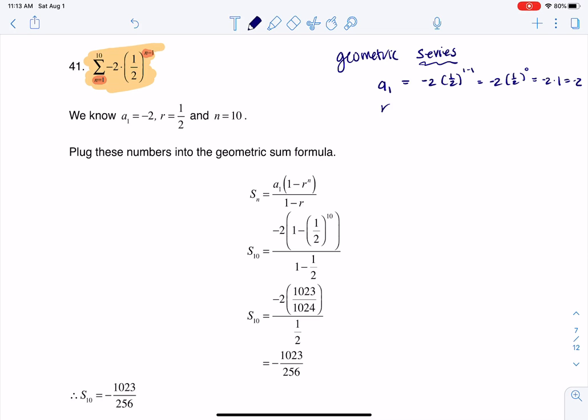So I know my a sub 1 value, which is great. And because we're given this series in summation notation, I can see my r value. My r is always the base of that power. We've got an exponential term—I say exponential because the variable's up in the exponent—and that exponential growth we learned about in chapter 6 plays out in geometric series and geometric sequences. So my r value is 1 half.